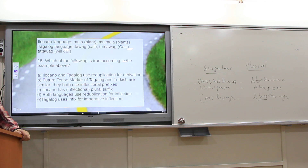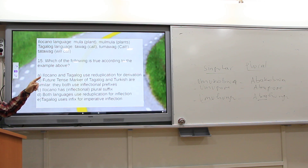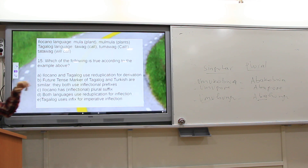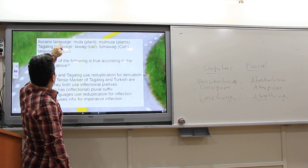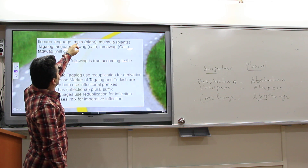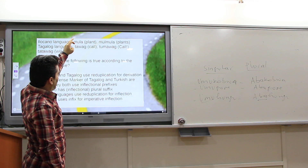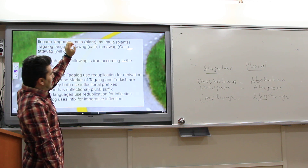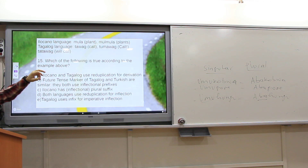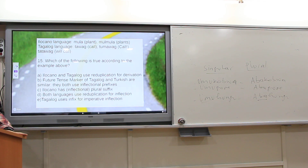Which of the following is true according to the Mula and Tagalog examples? Tagalog uses reduplication for derivation — for example, 'tawak' → 'tumawak.' However, this particular example is for inflection, not derivation. Future tense markers in Tagalog and Turkish are similar: both use an inflectional prefix.